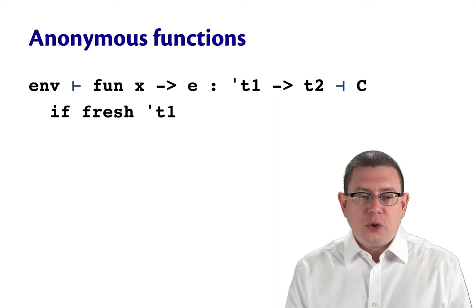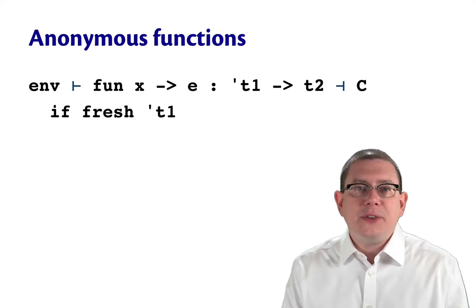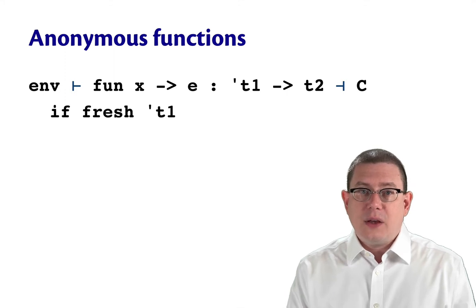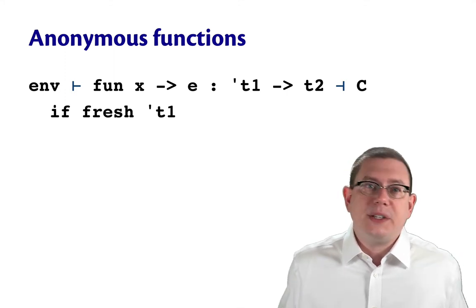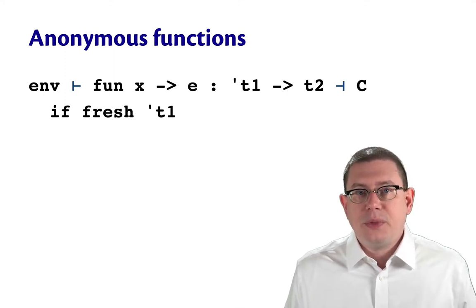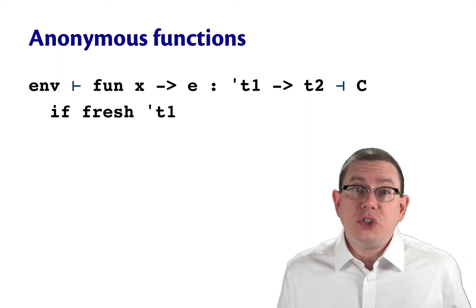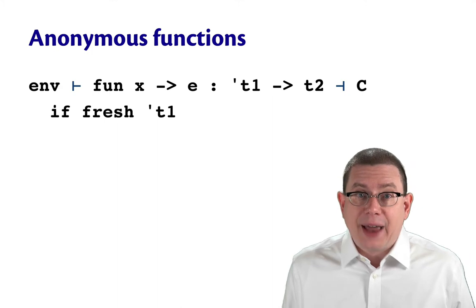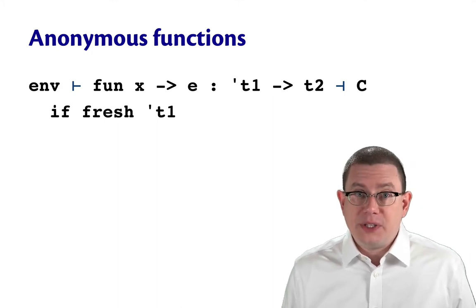But an algorithm looking at this a priori is going to have no idea what type was intended for that variable. So the algorithm introduces a new type variable to stand for the type of x. That type variable is tau1.